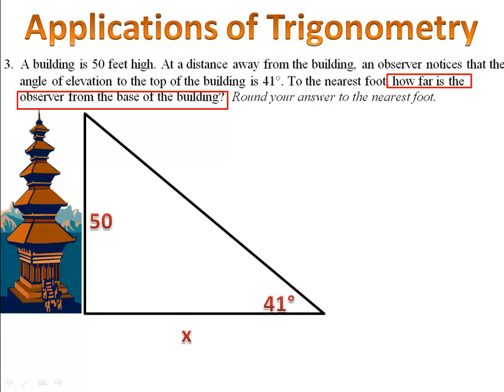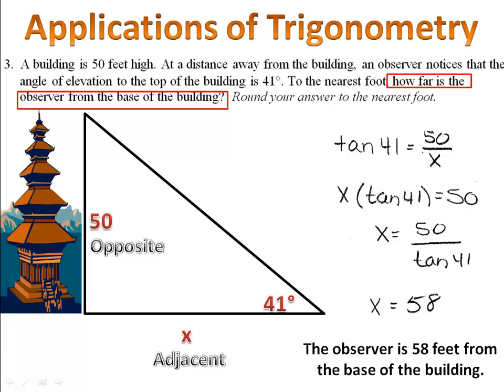We began by looking at the sides that we have. We had our opposite and our adjacent. Opposite and adjacent is the tangent ratio. And so we have the tangent of 41 degrees equals 50 over X. Now we cross multiply and solve for X. X equals 58, which means the observer must be 58 feet from the base of the building.